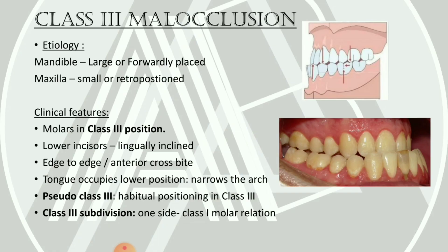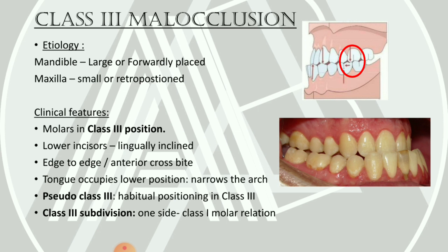Moving on to Class 3 malocclusion. The etiology is usually due to the mandible being large or forwardly placed, or the maxilla being small or in retroposition, or a combination of both. In Class 3 malocclusion, the molars are in Class 3 position — the mesiobuccal cusp of the maxillary first molar occludes posterior to the buccal groove of the mandibular first molar, meaning the maxillary first molar is severely posteriorly positioned relative to the mandibular first molar.